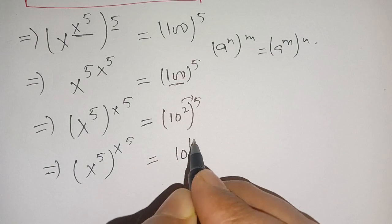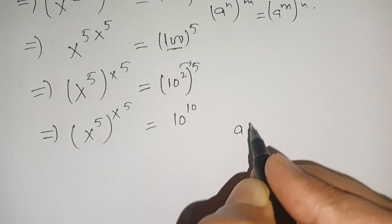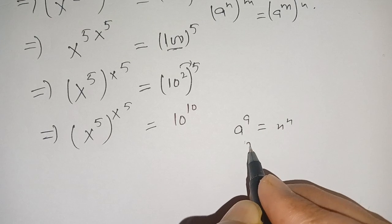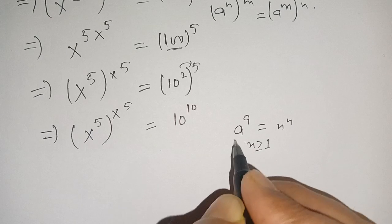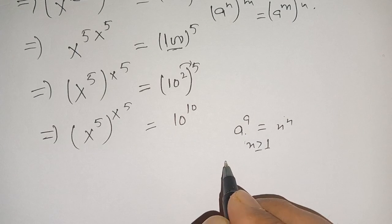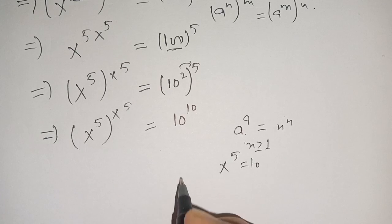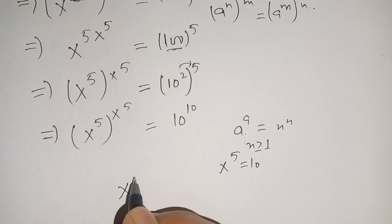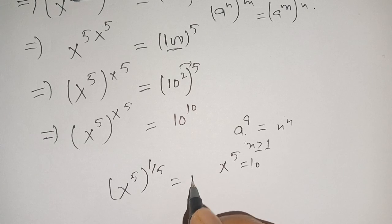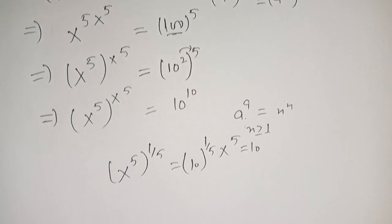This becomes the form a^a = n^n. If n is greater than or equal to 1, we can compare either base to base or power to power. Comparing base to base, we get x^5 equals 10. Taking the 1/5 power of both sides: (x^5)^(1/5) equals 10^(1/5), and the 5s cancel out.